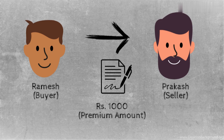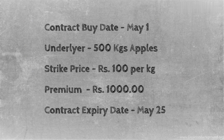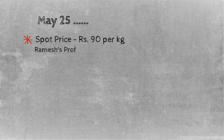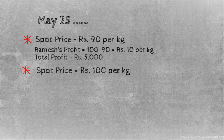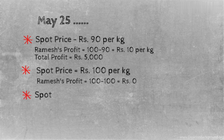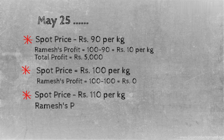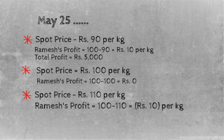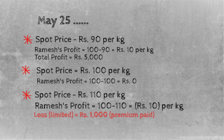As per the terms of the agreement, at the time of expiry on May 25th, Ramesh will decide if he wishes to buy the apples or not. By paying this premium, Ramesh buys the right to decide at a later date. On May 25th, if the rate is ₹90 per kg, Ramesh exercises his right to buy and makes a profit of ₹10 per kg, or a total profit of ₹5000. If the rate equals the strike rate of ₹100, he may or may not exercise his right. If the rate is more than ₹100, he can simply decline to buy the apples, limiting his loss to ₹1000 — the premium paid. This way he has hedged his risk of the rate exceeding his buying capacity.